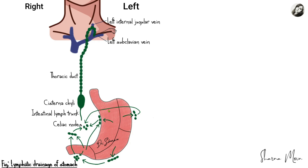Now for the clinical importance: lymph from the stomach drains into the celiac nodes, then into the intestinal lymph trunk, then to the cisterna chyli, and from there to the thoracic duct. The thoracic duct ascends through the thorax, and at the level of the fifth thoracic vertebra it crosses from the right side to the left side, continuing up to the neck region, where it curves laterally and downwards and opens into the junction between the left internal jugular vein and the left subclavian vein.